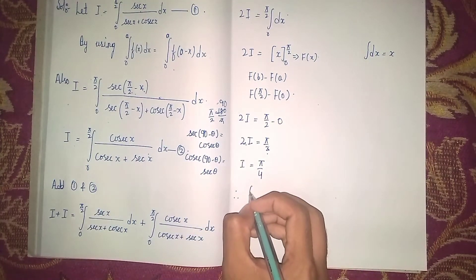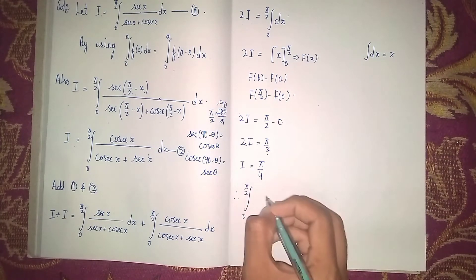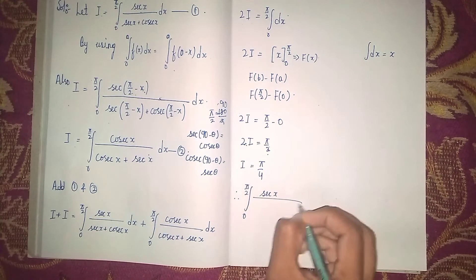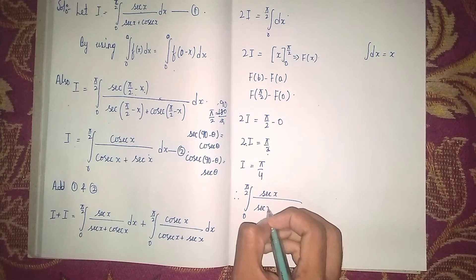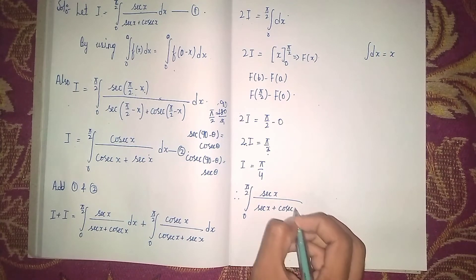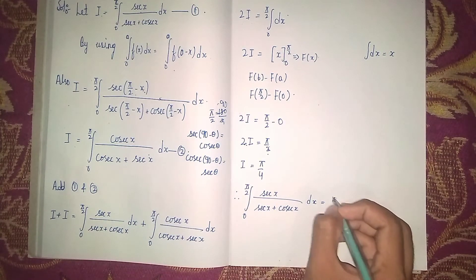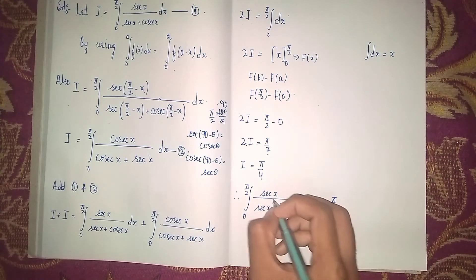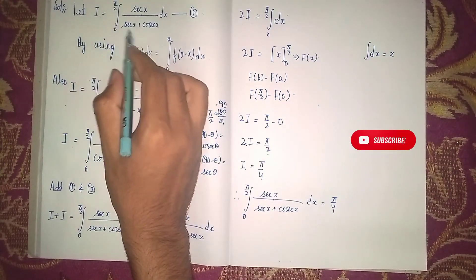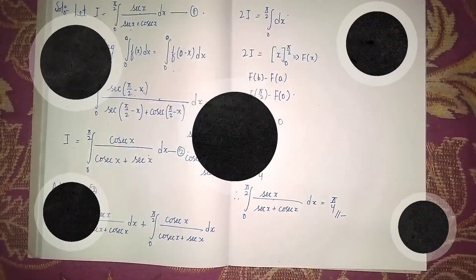Therefore, the integral from 0 to π/2 of sec(x) divided by (sec(x) + csc(x)) dx equals π/4. Since I was defined as this function, π/4 is our final answer. Thanks for watching!